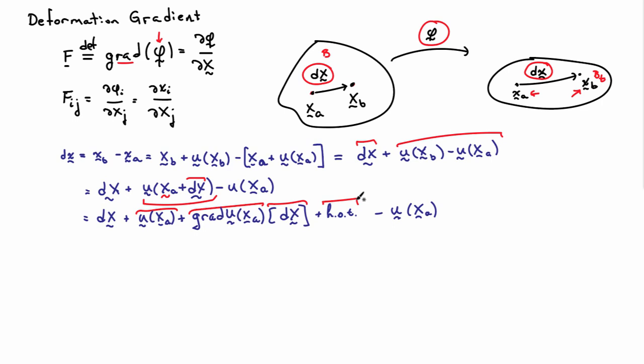I'm not going to worry about those because I'm going to take a limit as the size of DX goes to zero. And then there is this minus U XA here, which goes along for the ride. You can see that one is going to cancel with the first U XA.